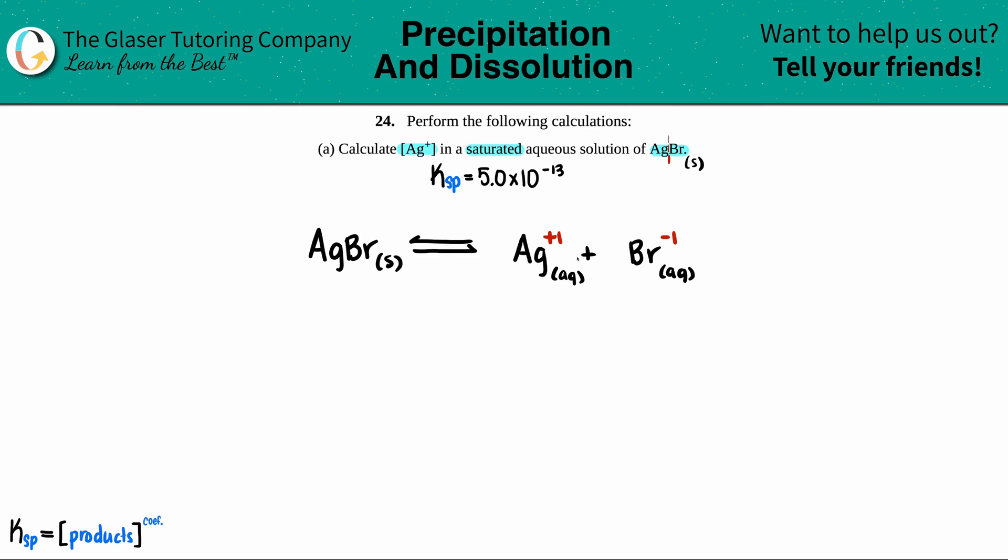The thing that we needed to pull up from the back of the textbook is the Ksp number of the AgBr. So I went and did that for you guys. The Ksp value for the AgBr is 5.0 × 10^-13. Now let's just get the formula that fits this equation. Here it is. Ksp equals just the products raised to the coefficients. No solids allowed.